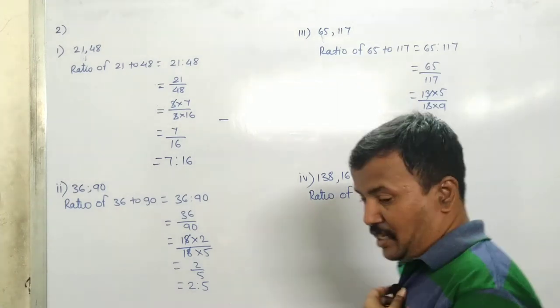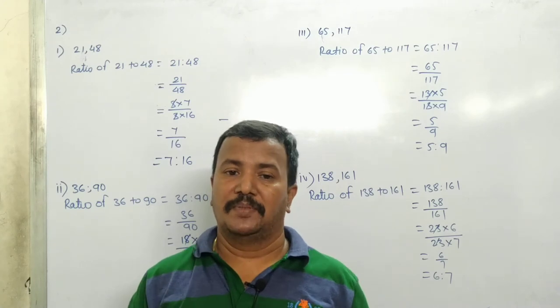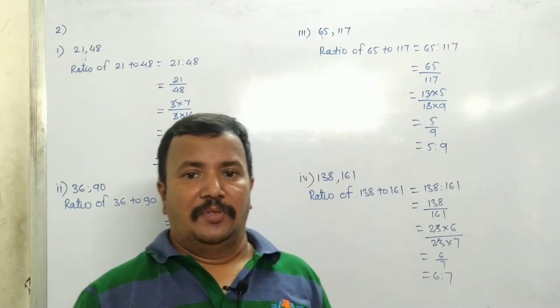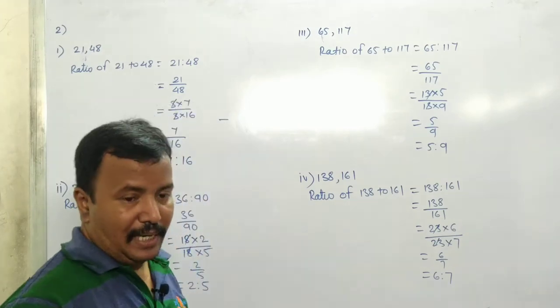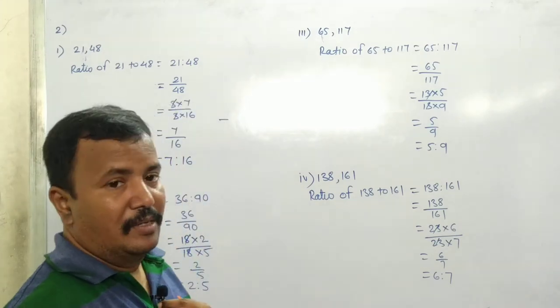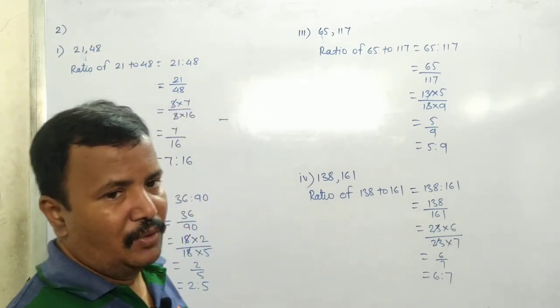Okay, now we are going to start problem set 4, question number 2. We write ratio of first number to second number.